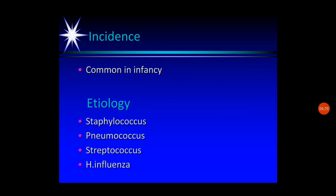The incidence is very common in infancy — small children are more prone to pyothorax. Regarding etiology, pus formation is caused by bacteria: Staphylococcus, Pneumococcus, Streptococcus, and Haemophilus influenzae. These are the main causative organisms for pyothorax.